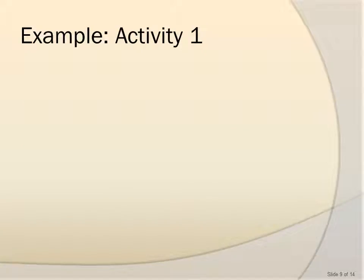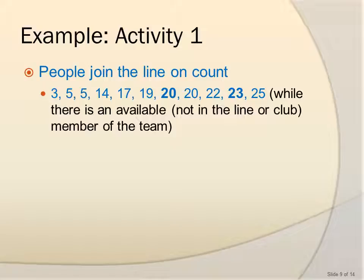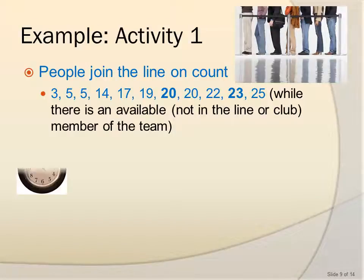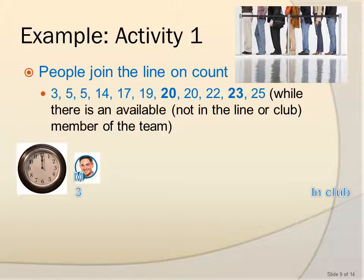Now let's look at the example of Activity 1. People join the line on counts 3, 5, 5, 14, 17, 19, 20, 20, 22, 23, and 25. Let's start the animation clock. Three counts after we started the clock, Caleb arrives — he's a guy. He arrives at three, the club is empty, so he can come right in. There are no girls, so he's going to stay for only two counts and leave at five.